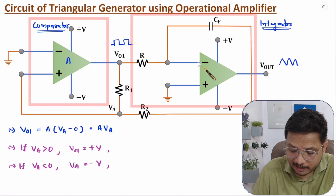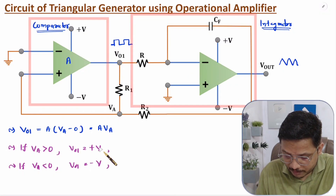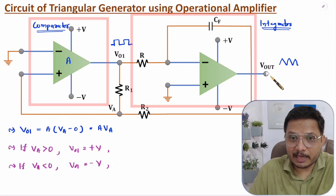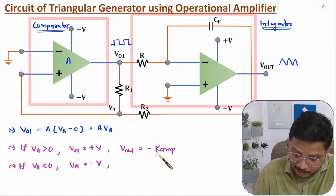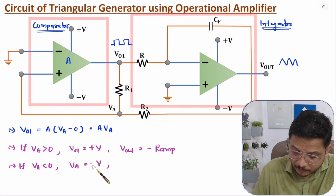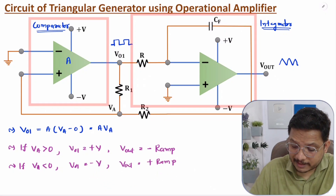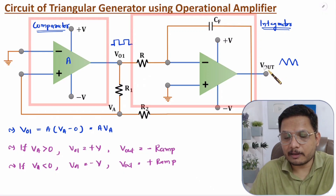This integrator is in the inverting configuration. So if V01 is plus V, the output will be a negative ramp. And if V01 is minus V, the output will be a positive ramp. That is how we get the triangular wave output.